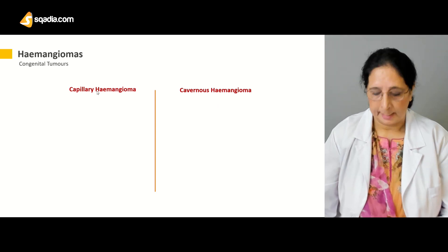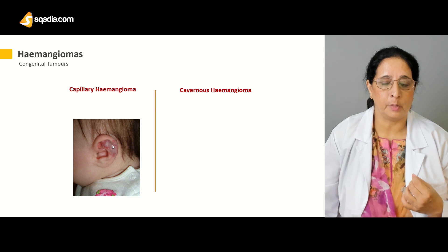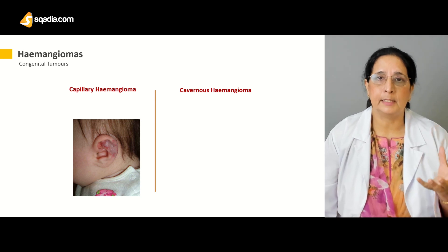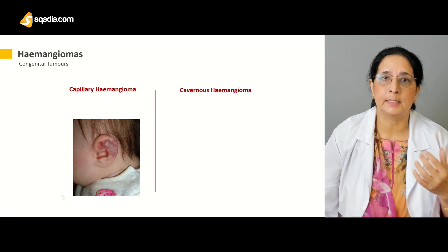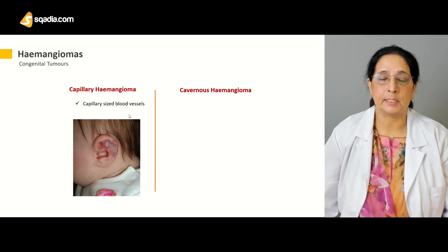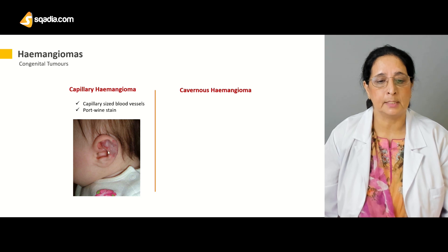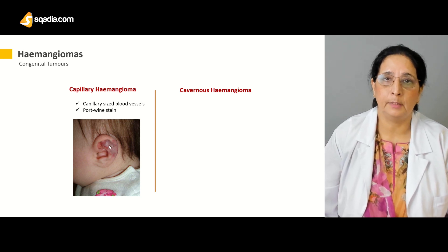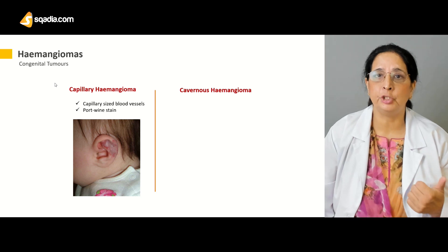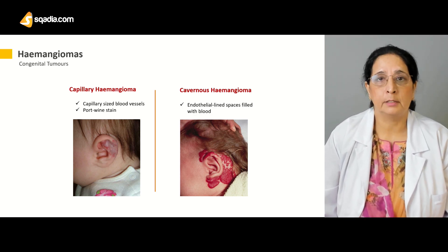We have two types: capillary hemangiomas and cavernous hemangiomas. Capillary hemangiomas develop from capillary-sized blood vessels — there is a collection of blood in those capillaries giving a reddish appearance. This overgrowth or dilation of capillary-sized blood vessels is also called port wine stain, a name derived from the color of port wine from Portugal.